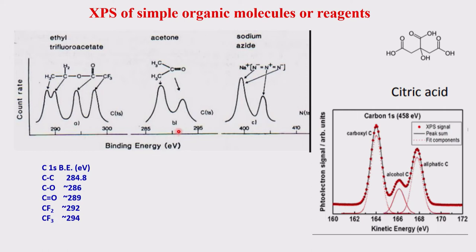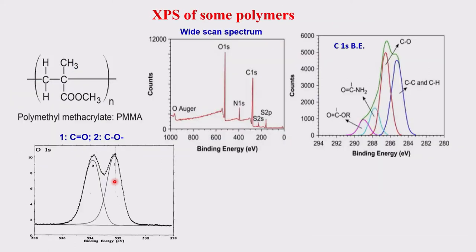I explained at the end of the previous class three molecules and citric acid, where binding energies come from. The greater the electronegative groups attached, the higher the binding energy. Be careful about the x-axis label: if it says kinetic energy, you subtract from a common energy to get binding energy, so greater kinetic energy means smaller binding energy. If the species tends to be positive, binding energy is higher; if negative, it will be lower.